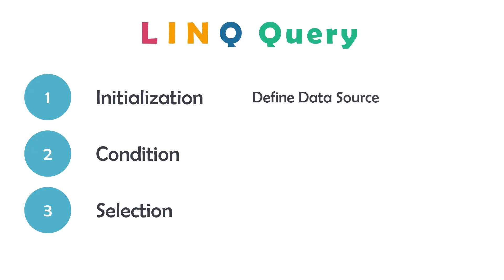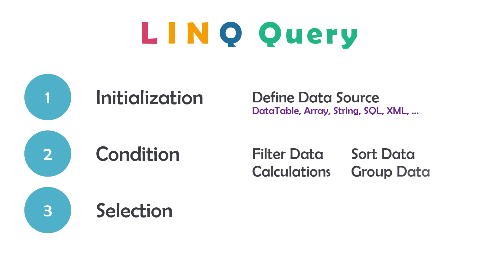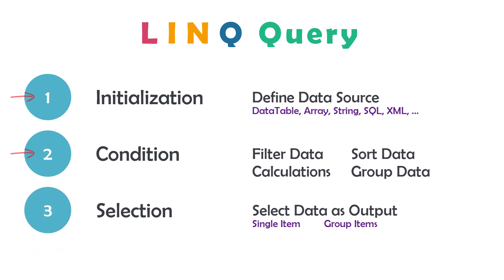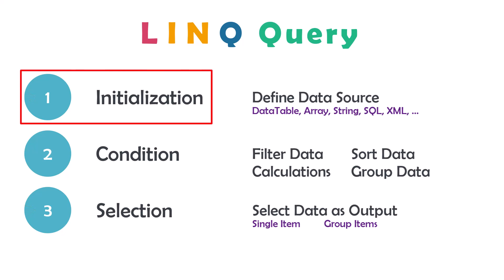Initialization is to define the data source where we get the data from — for example, a data table, an array, string, SQL, XML, or any other data source. Condition is to filter the data to get specific data; here we can also sort, do calculations, or group the data. Selection is to select the data after doing the previous steps. A query could also contain only two parts, such as initialization and condition, or initialization and selection — but initialization must always be available.